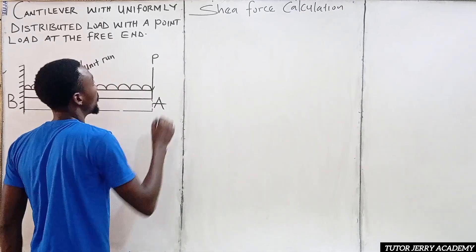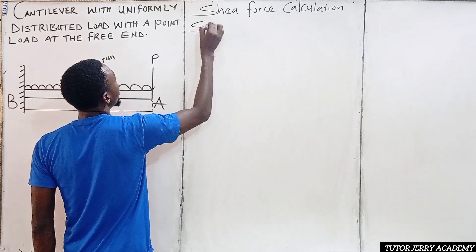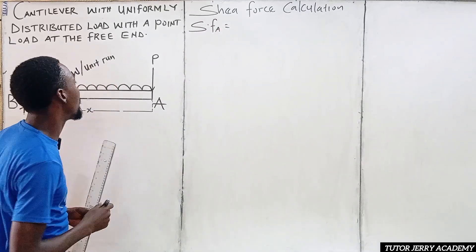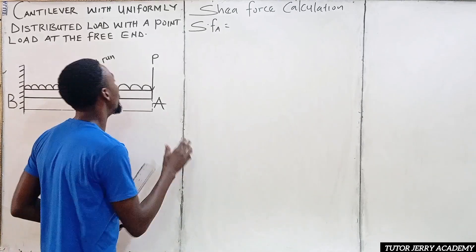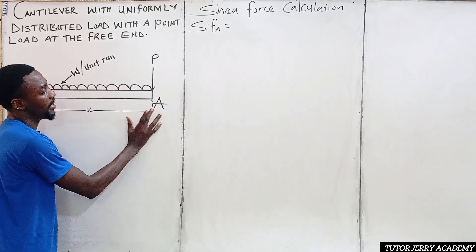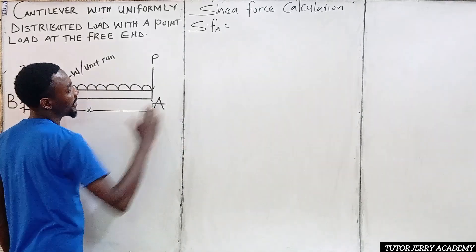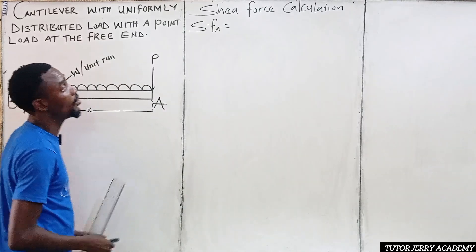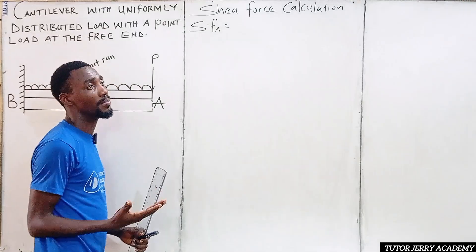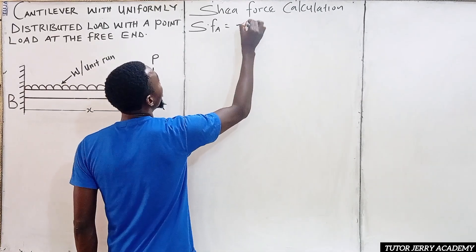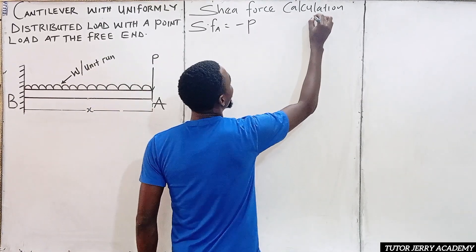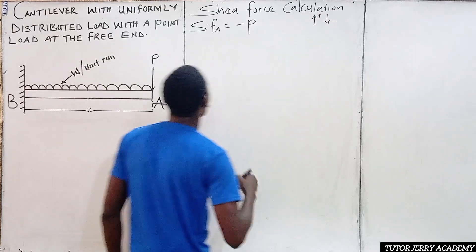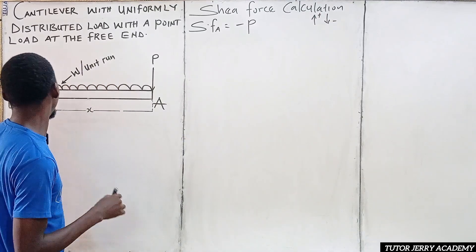The first thing we are going to do is calculate the shear force at point A. If you check the right-hand side, the only force you see there is P. Don't forget: upward force is positive, downward force is negative. So we are going to have negative P.